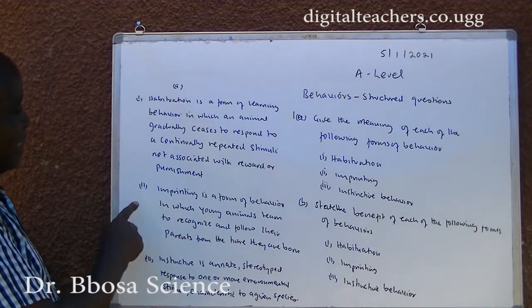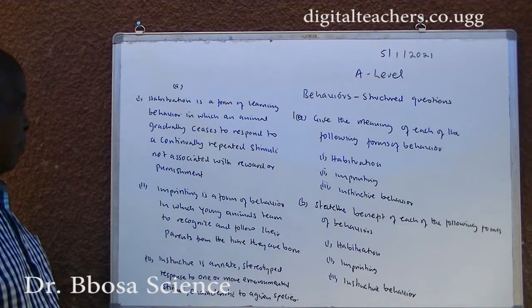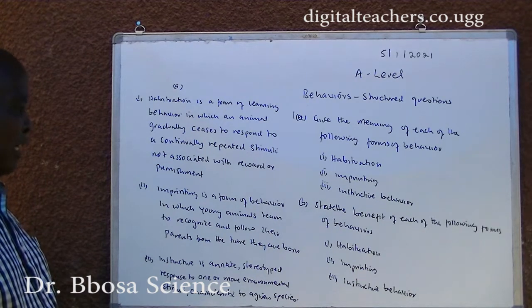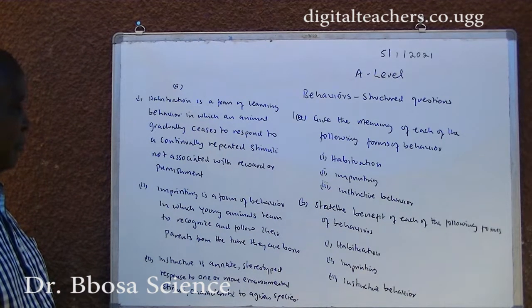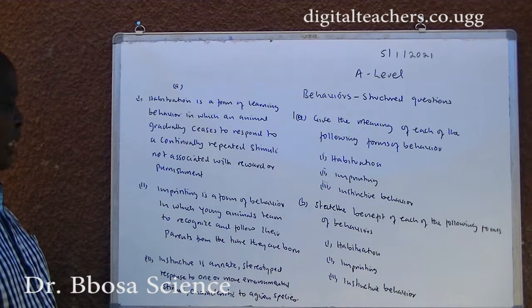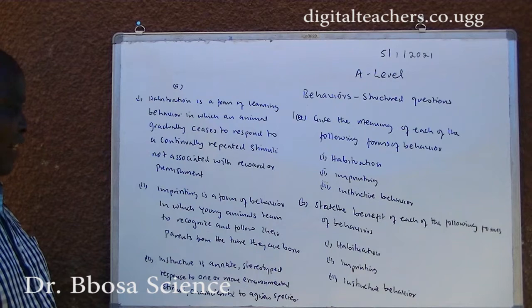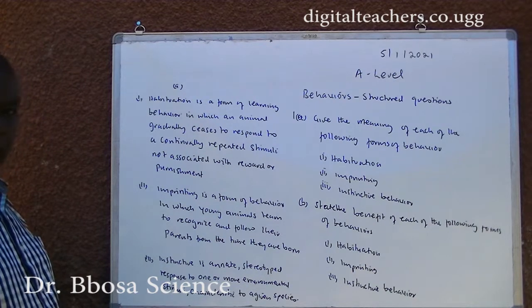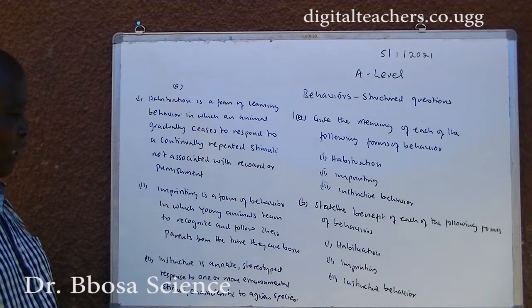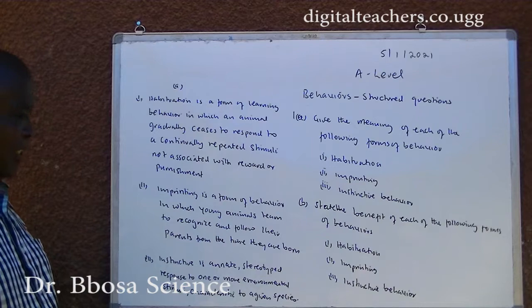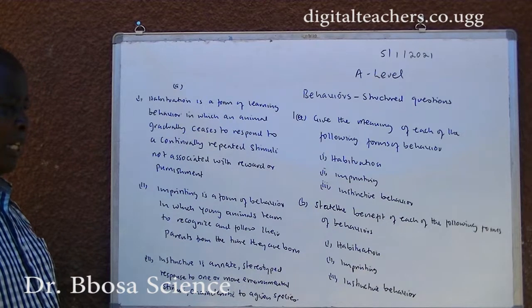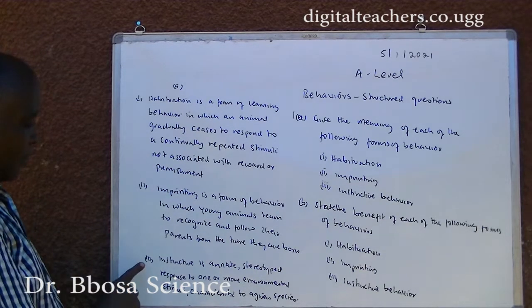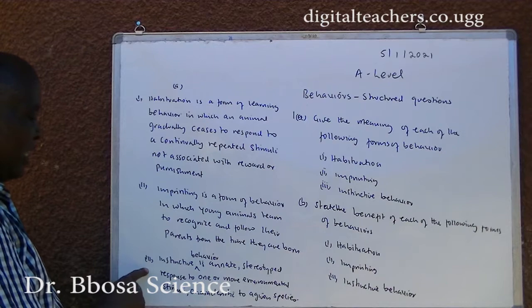Number 2: Implanting is a form of behavior in which young animals learn to recognize and follow their parents from the time they are born.